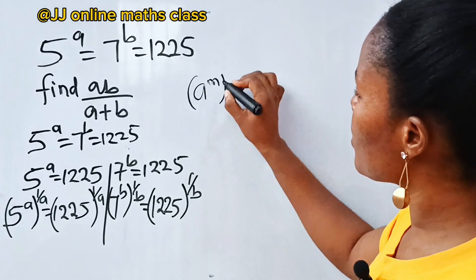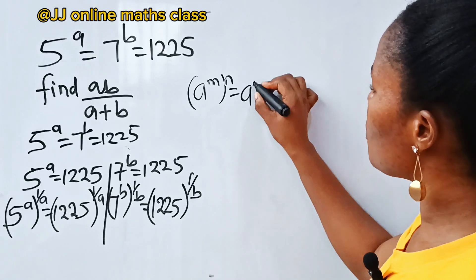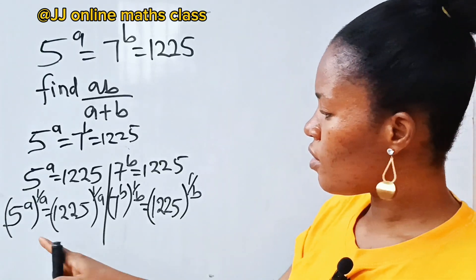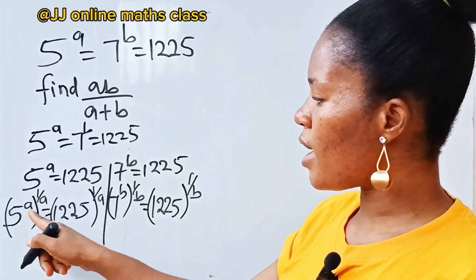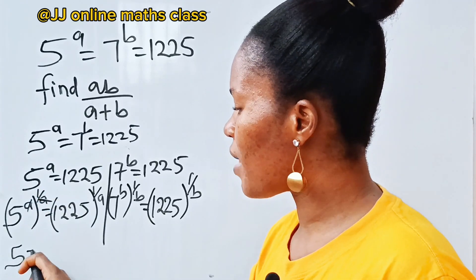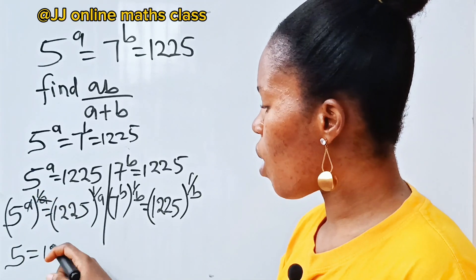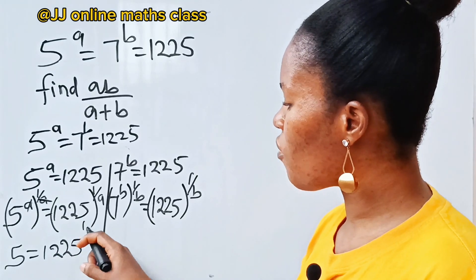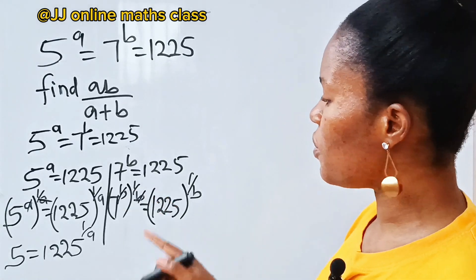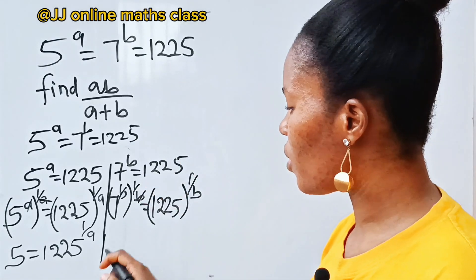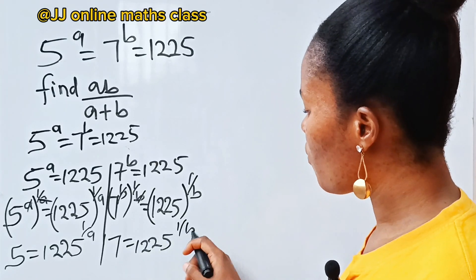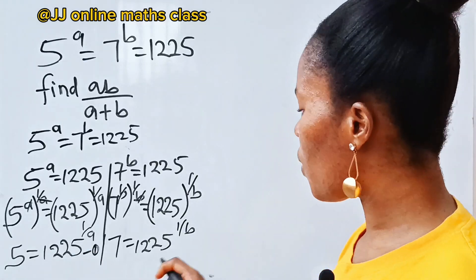Now recall that a to the power of m raised to the power of n is equal to a to the power of m times n. So for the first equation, a times one over a — the a's cancel — and we are left with only five. So five is equal to 1225 to the power of one over a. Similarly, b divided by b leaves seven, so seven is equal to 1225 to the power of one over b.